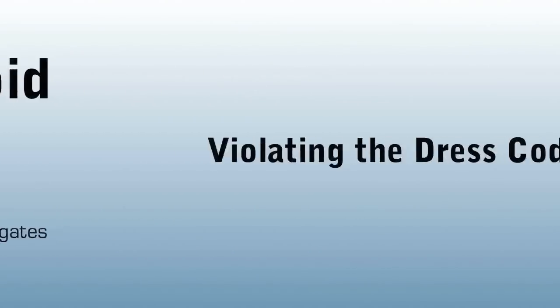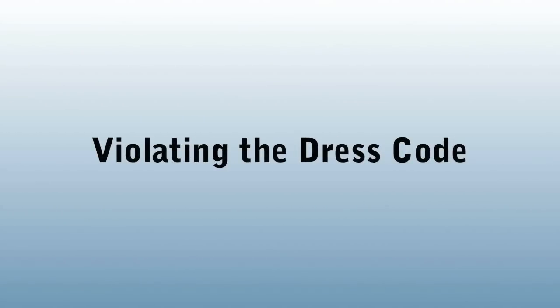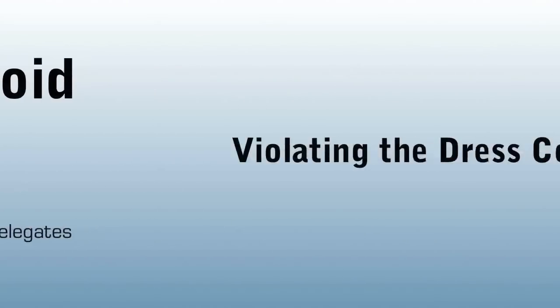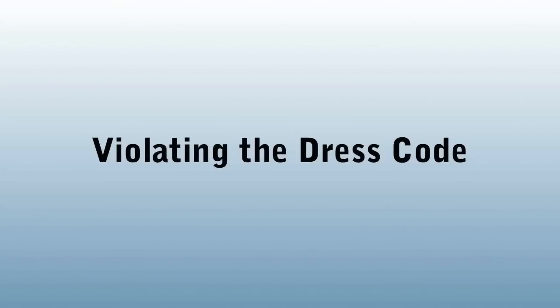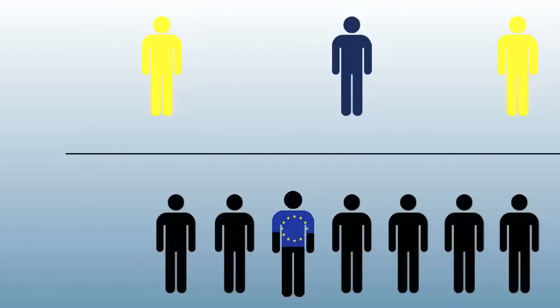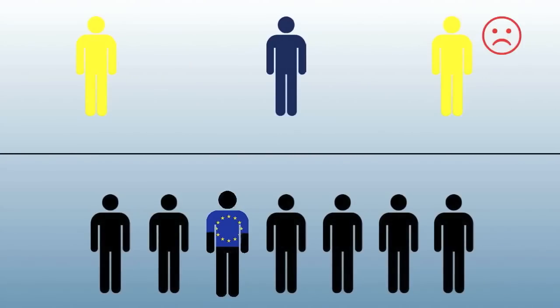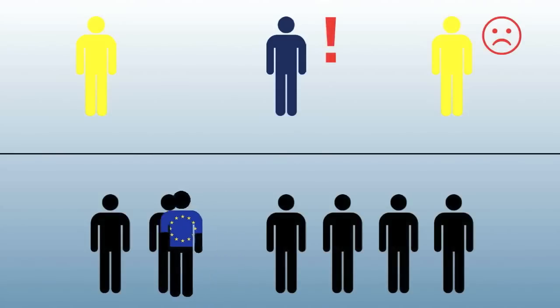Chapter 3: What to avoid? Violating the dress code. Delegates not adhering to the dress code or displaying national symbols may be removed from the room by the director until they get changed.